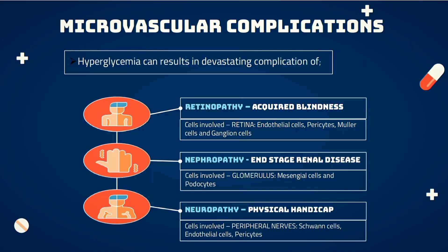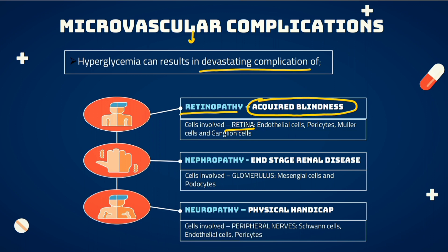These microvascular complications produce various devastating effects in various organs. In the eyes, retinopathy is produced, which will ultimately cause acquired blindness. The main cells involved are those of the retina: endothelial cells, pericytes, Müller cells, and ganglion cells.